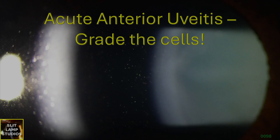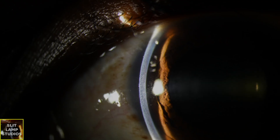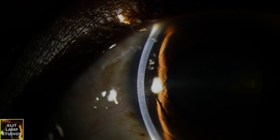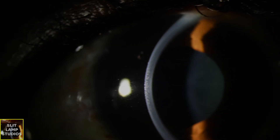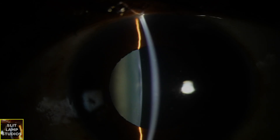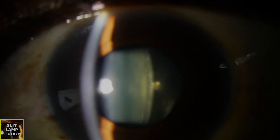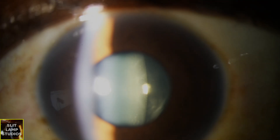Acute anterior uveitis — grade the cells. Assessment of anterior chamber cells is a key part of grading inflammation in acute anterior uveitis. Officially, we're meant to be using a 1x1 mm beam at high magnification into the anterior chamber, ideally in a dark room and with maximal illumination.